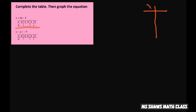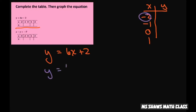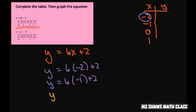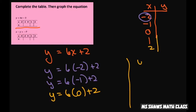Let's first complete the table. We have x values: negative 2, negative 1, 0, 1, and 2. We've taken y equals 6x plus 2 and we're just inputting our x values: y equals 6 times negative 2 plus 2, y equals 6 times negative 1 plus 2, y equals 6 times 0 plus 2, y equals 6 times 1 plus 2, and y equals 6 times 2 plus 2.